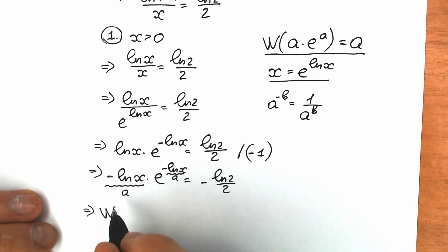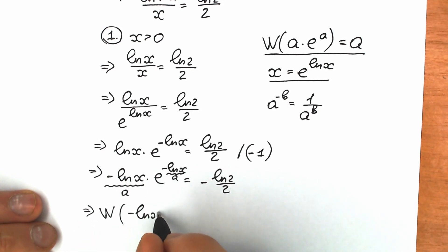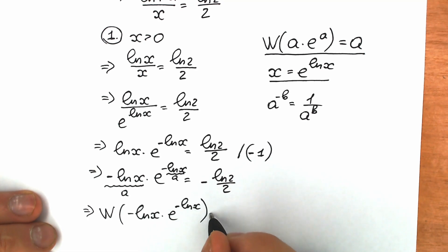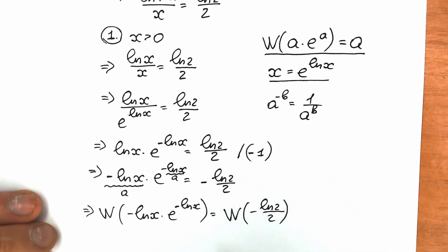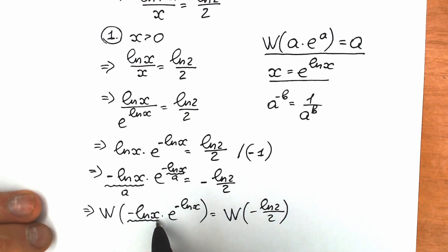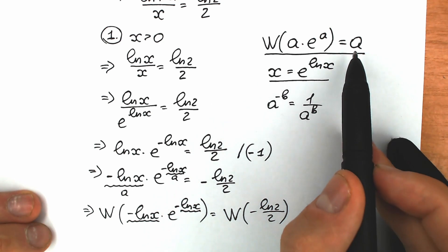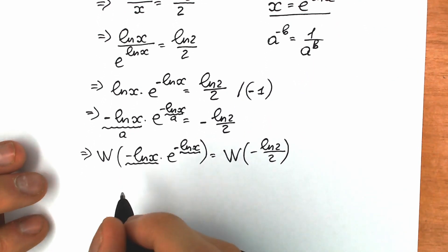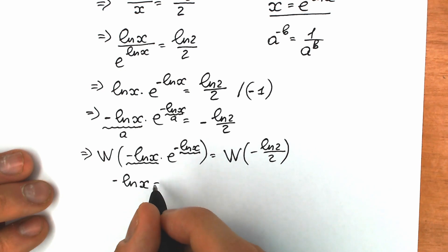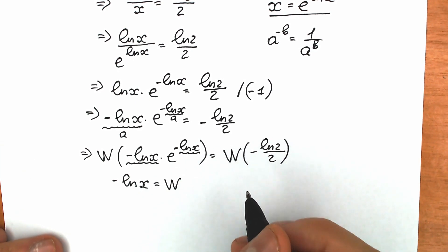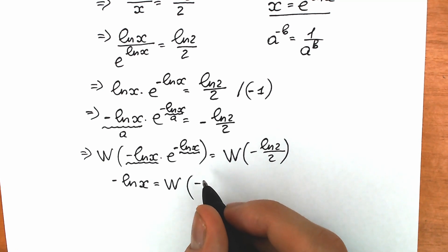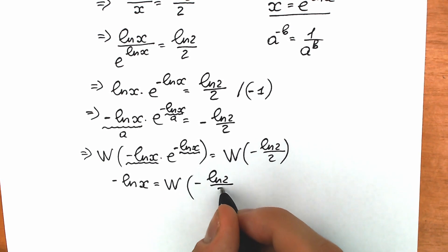So applying Lambert W to both sides: W of (minus natural log x · e to the power minus natural log x) equals W of minus natural log 2 over 2. The left side simplifies to a, which in our case is minus natural log x. So as a result, minus natural log x equals W of (minus natural log 2 over 2).